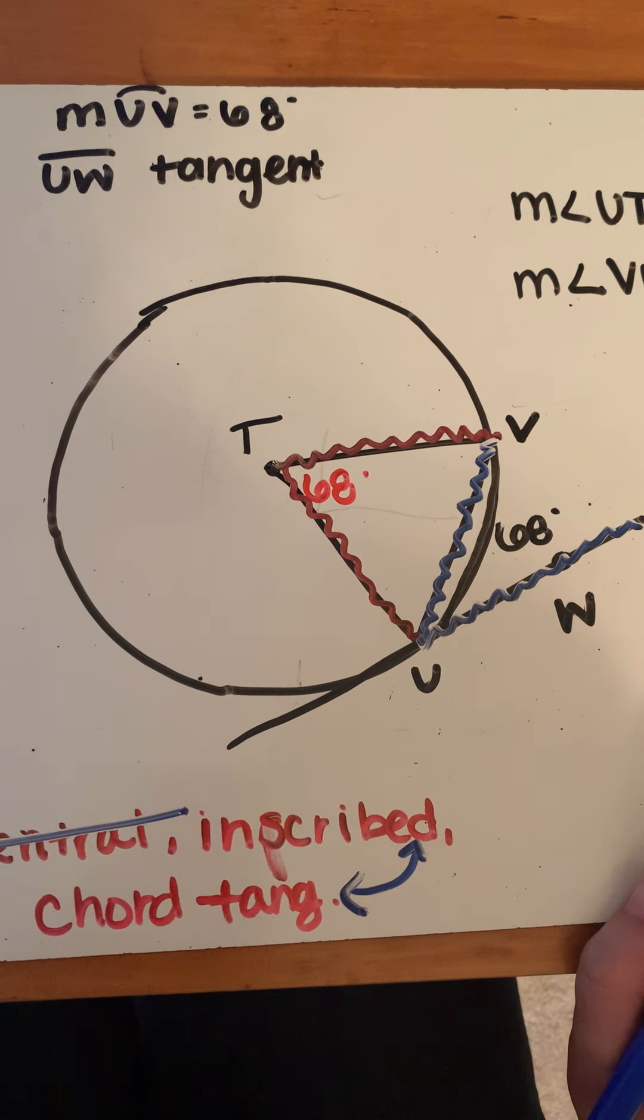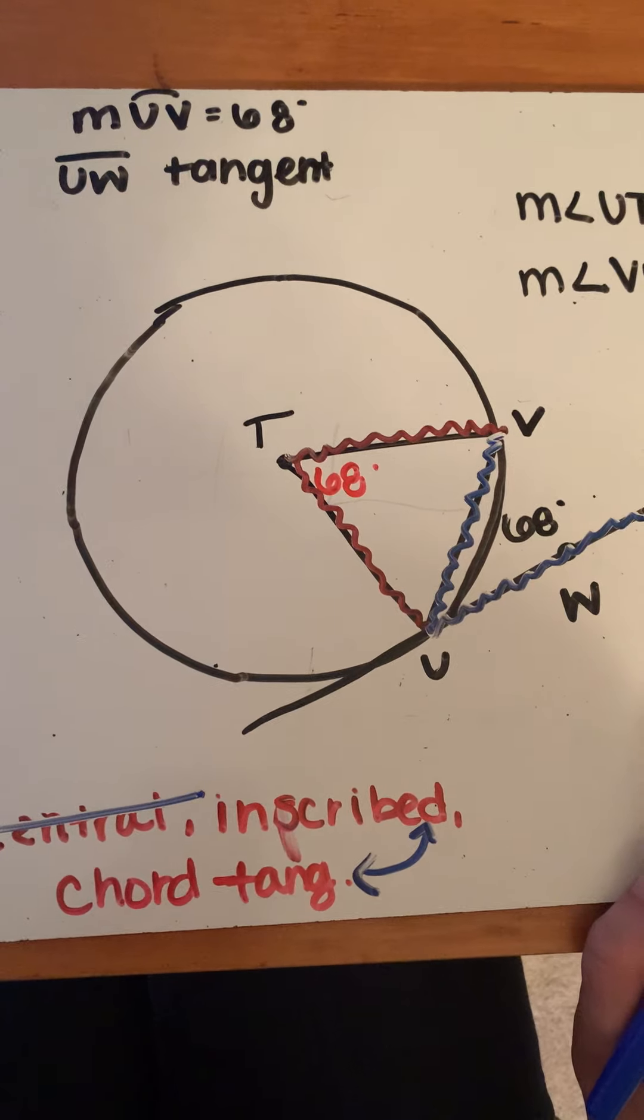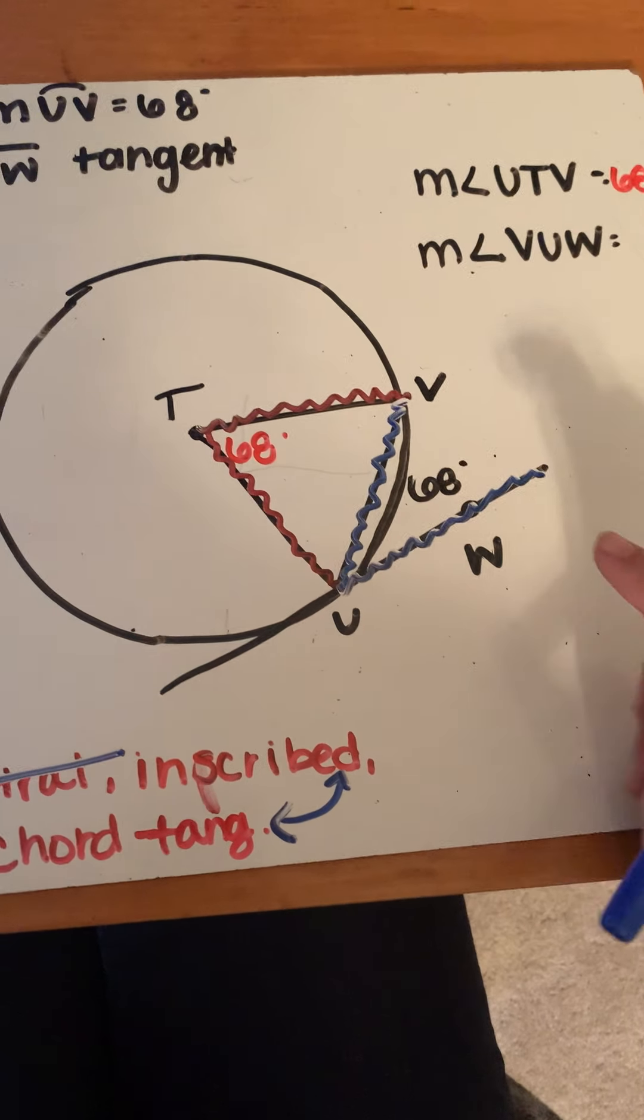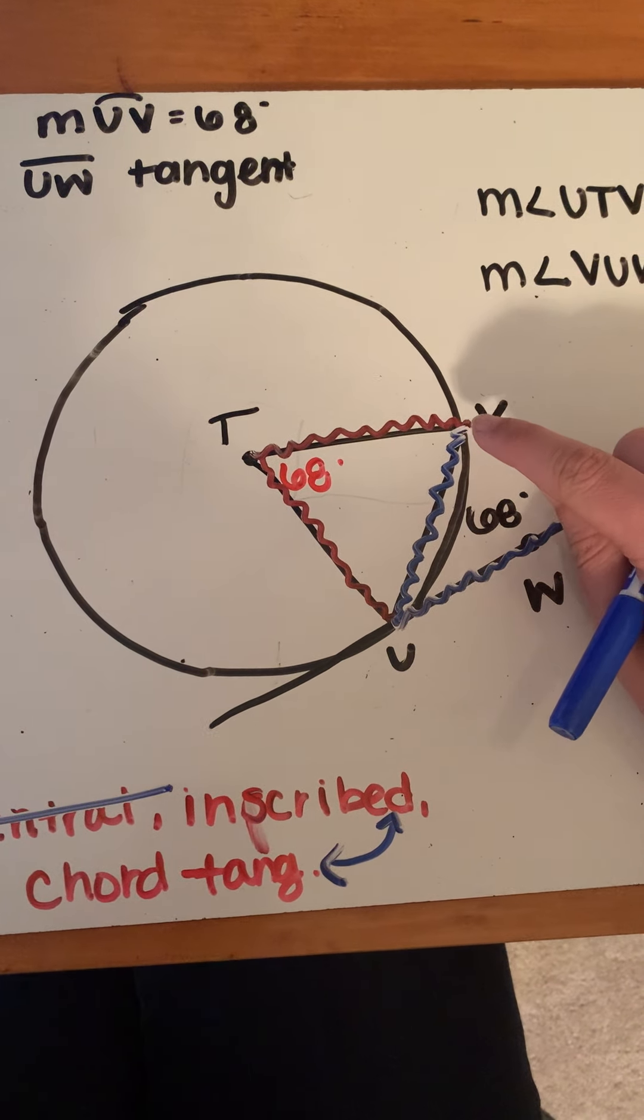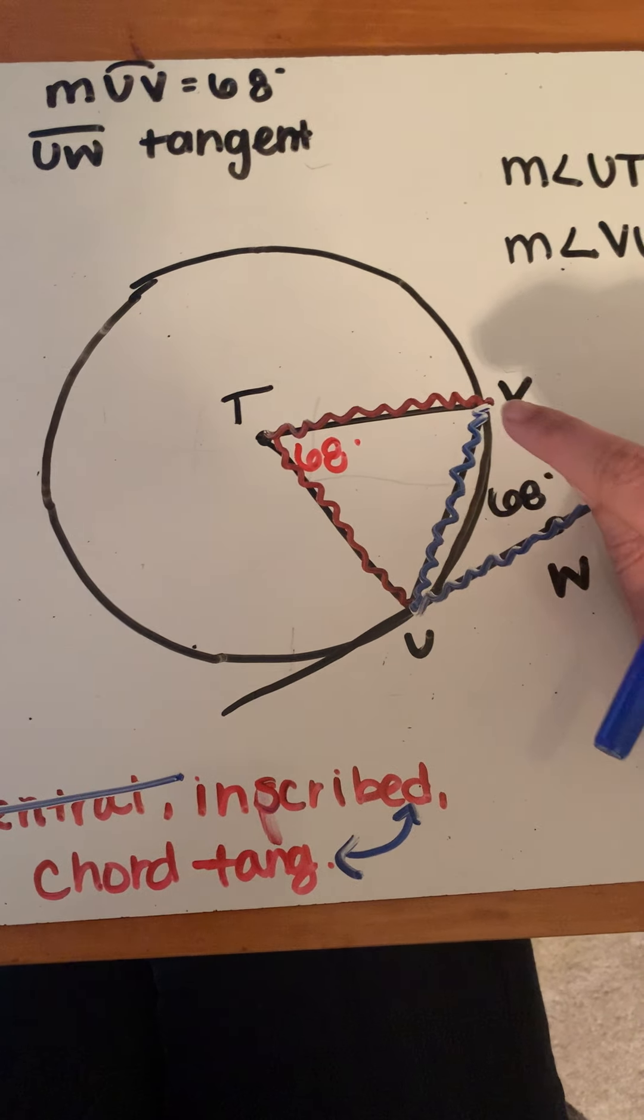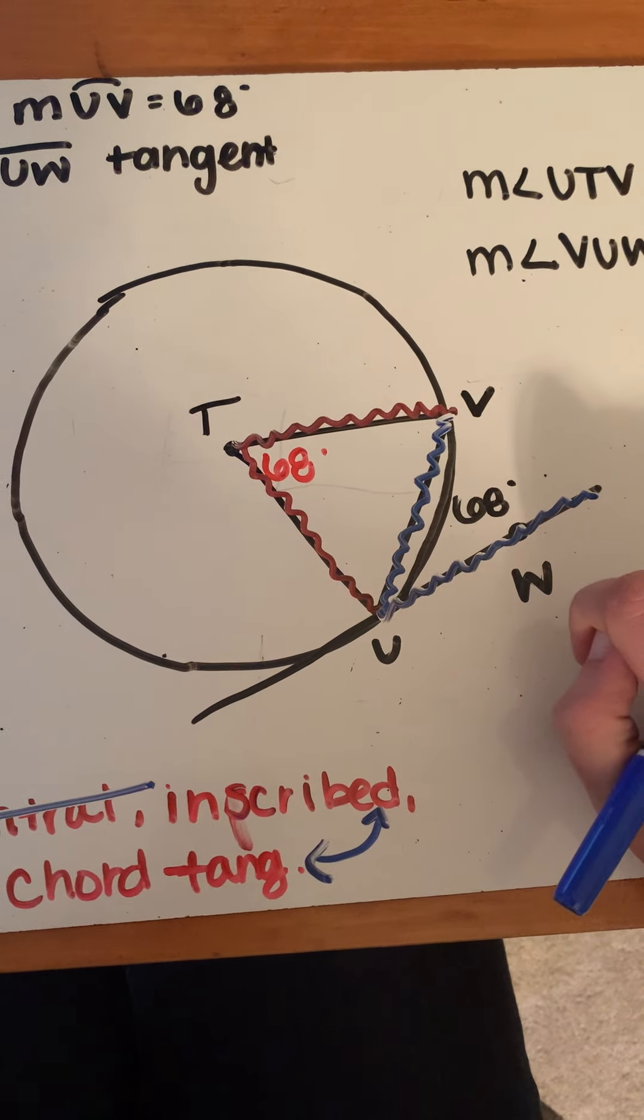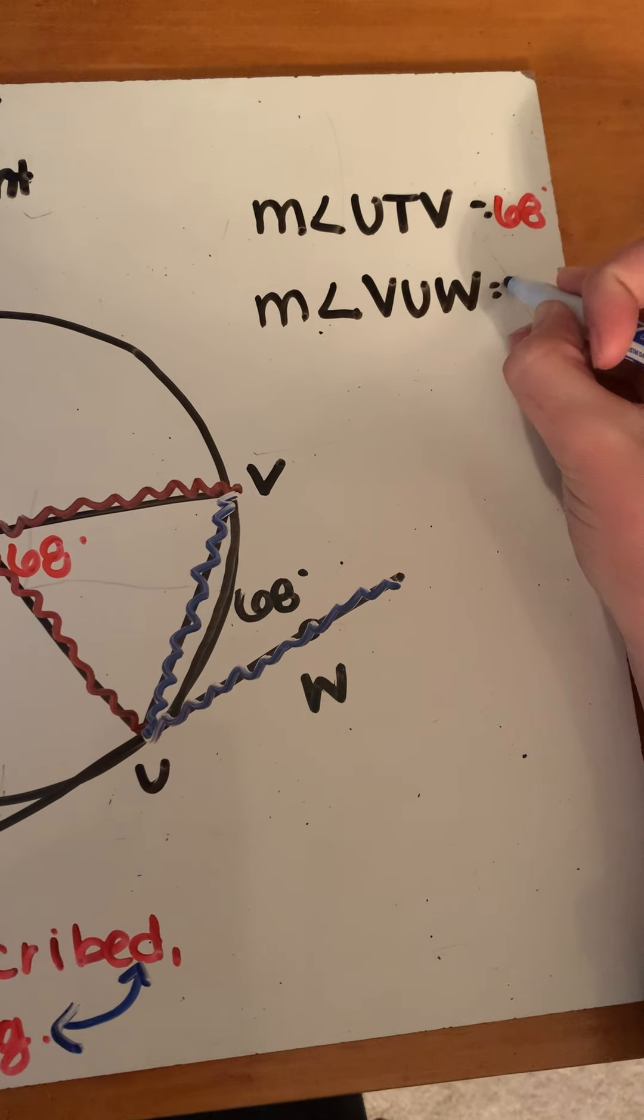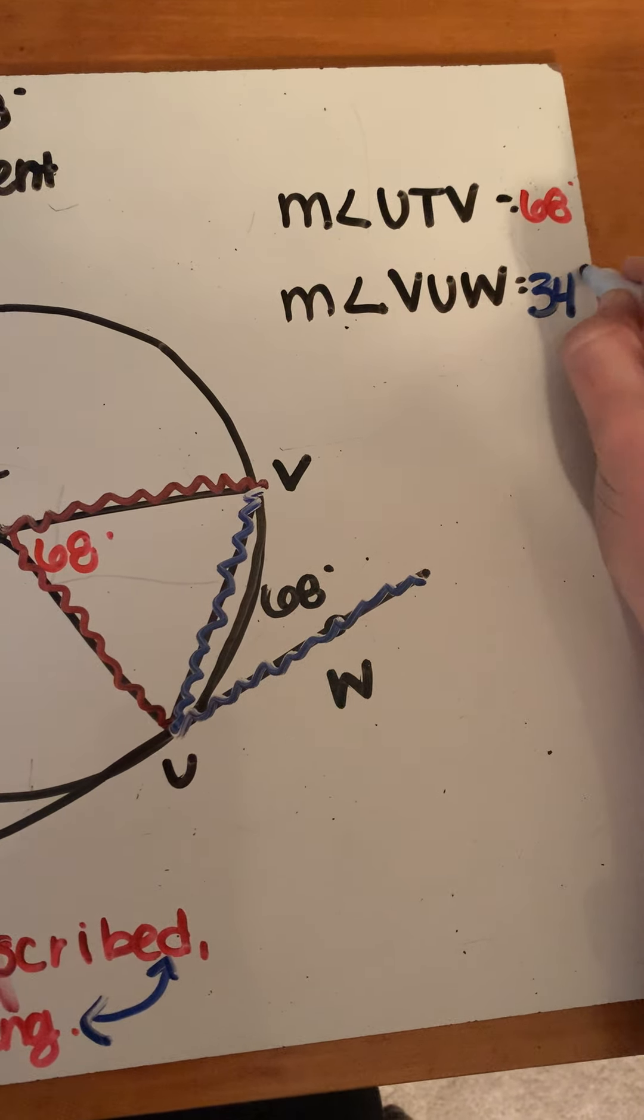Do you remember how an inscribed angle relates to its arc? It's half of it. The arc for this one is the arc that's inside of it, so the arc inside this angle is UV. We're going to take 68 and divide it by 2. 68 divided by 2 is 34 degrees.